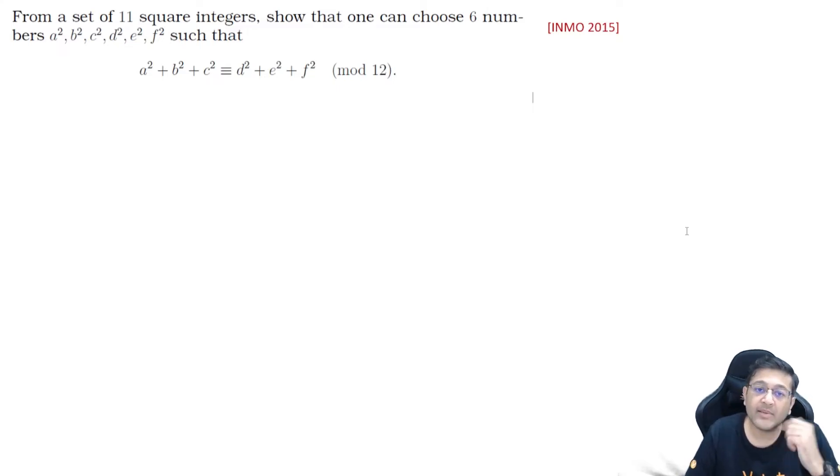From a set of 11 square integers, show that one can choose 6 numbers such that a² + b² + c² is congruent to d² + e² + f² mod 12. That is your question. Please pause this video here and give this question a proper attempt, and then after that watch the solution so that you get the most out of this.